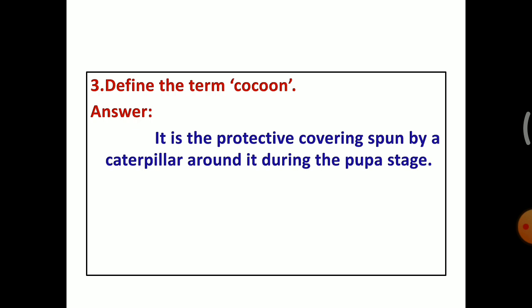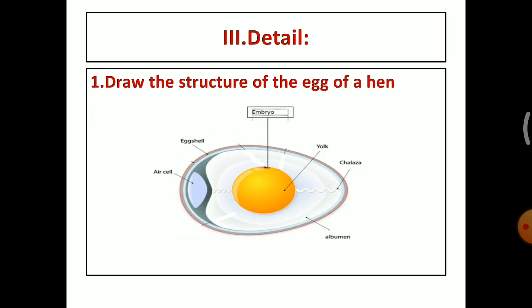It is the protective covering spun by a caterpillar around it during the pupa stage. You know that the life cycle of butterfly. The butterfly lay eggs on the leaf. After hatching the egg, from the egg comes the caterpillar. The caterpillar eats leaf and it grows very fast. After 20 days it makes a spun around its body. This spun is called cocoon.